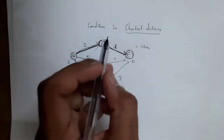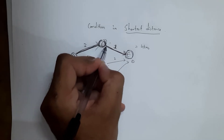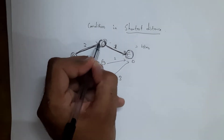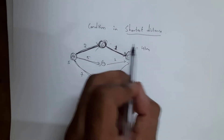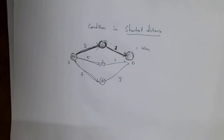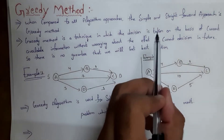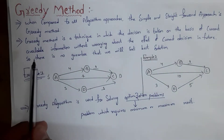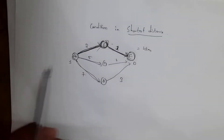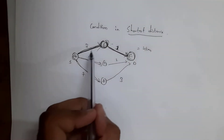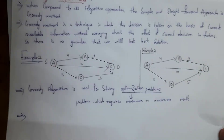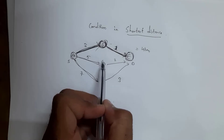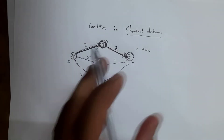After A to B, I need to travel from B to E to reach the destination. From B to E the distance is 1 kilometer — total 3 plus 1, that is 4 kilometers. It took 4 kilometers to reach from source to destination. Whatever current decision we took will also affect the future decision.